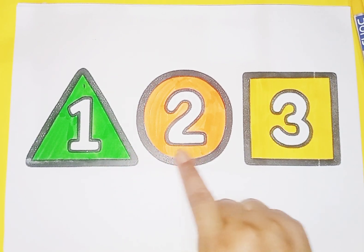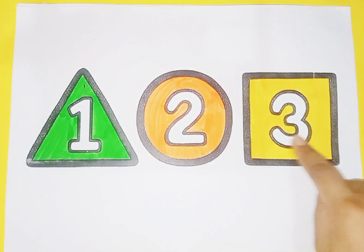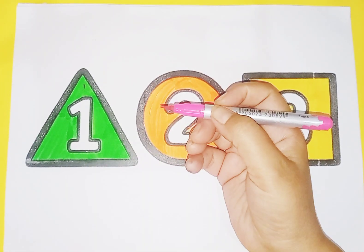Triangle, circle, square. Now we learn number and their spelling. Pink color.